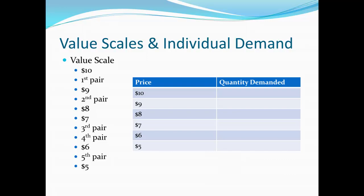Now let's take a look at the answers. At $10, none was demanded. At $9, one was demanded. At $8, it should be two. Think of the hurdle: at $8, we draw a hurdle at that level, and we can immediately see the first and second pair manage to hop over it, so two pairs will be demanded. At $7, the first and second pair still make it over, so still two are demanded. At $6, four pairs of socks manage to hop over, so four will be demanded. While at $5, even that fifth pair is going to be demanded as well. So the value scale — our comparison between sums of money and the value of various units of a good — provides us with the individual demand curve. Another important point is that the individual demand curve here follows the law of demand: at high prices, we don't want very much of the good; at lower prices, we do want more.